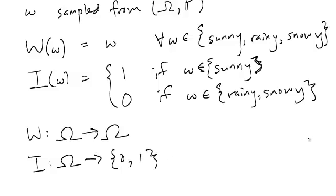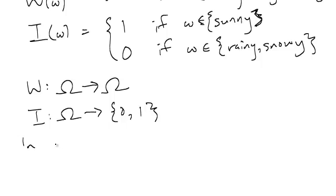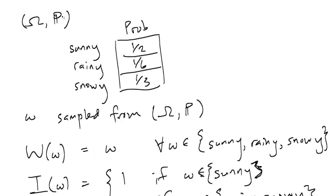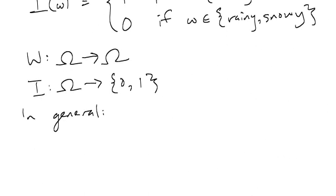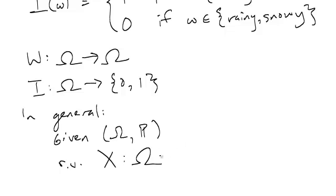In general, how we're going to define a random variable is that first, we're going to have an associated probability space, much like how we had an associated probability space up there. So in general, given a probability space (Ω, P), a random variable X is going to be a function that maps from Ω, the sample space, to some alphabet, which we'll denote by script X.